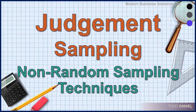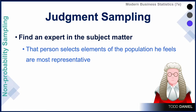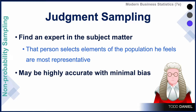It's called judgment sampling. With judgment sampling, you find an expert on the subject matter that you want to study, and you allow that person to select participants or elements of the population that he or she feels are most representative of the population. This form of sampling can be highly accurate and have minimal bias.